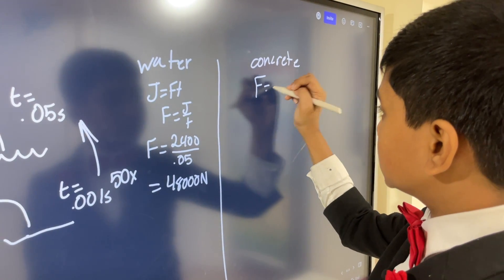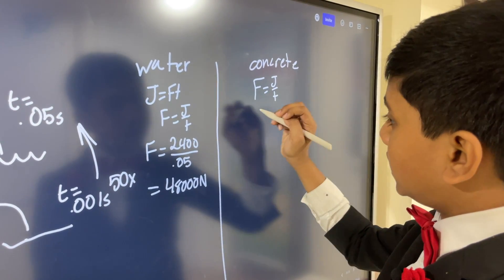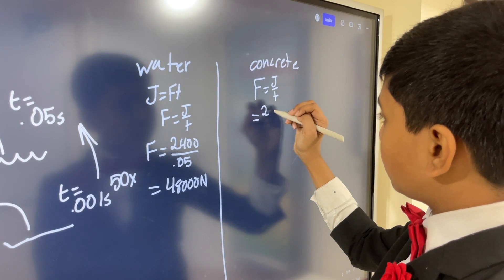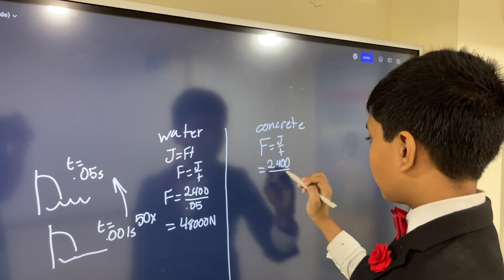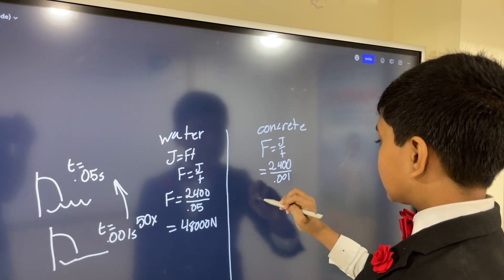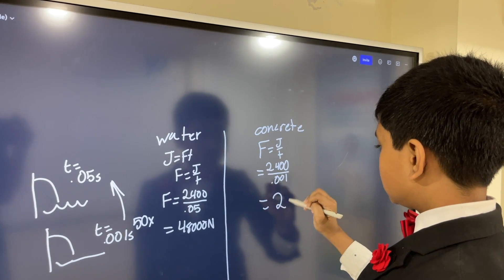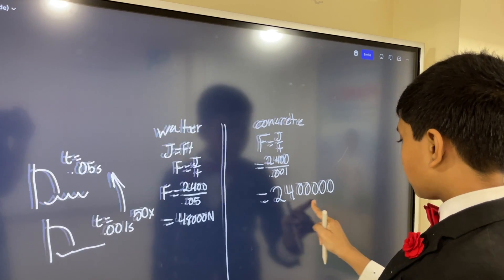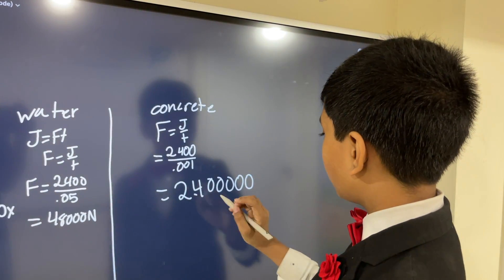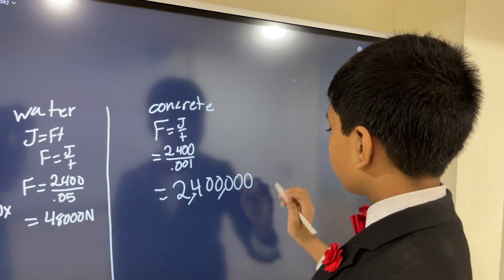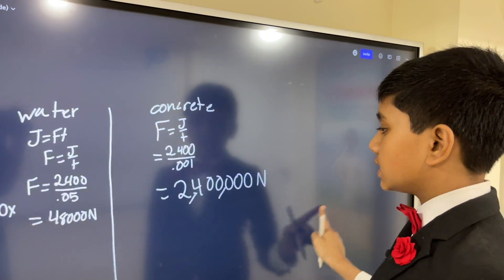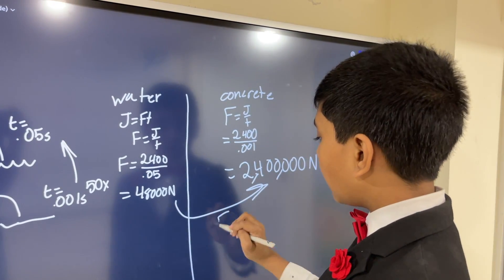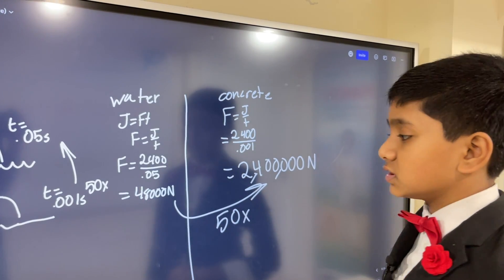Here, we just use the same equation, f is j over t, which is 2,400 over 0.001. That's adding 1, 2, 3 zeros, so it's 2.4 million newtons, which is 50 times worse than this one.